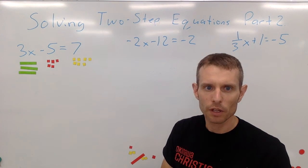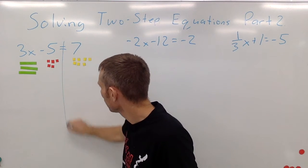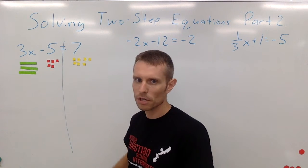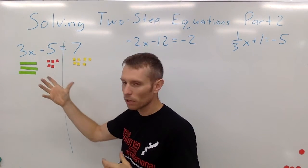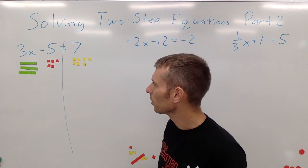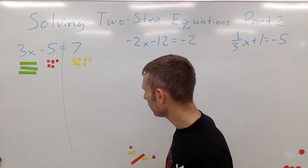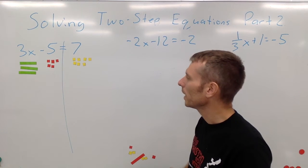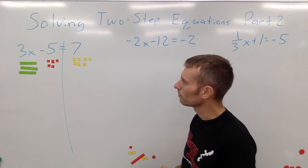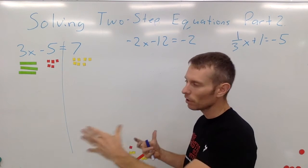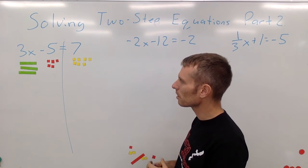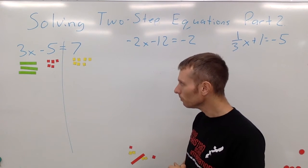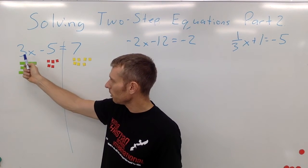We want to find out what x is — what number makes the left side of this equation balanced with the right side. Since we already have an equals sign, we know it's balanced somehow; we just don't know the value of x. Whatever we do to the left side, we also have to do to the right side. To isolate the variable, we need to use the inverse operation of what's happening.